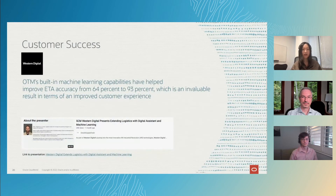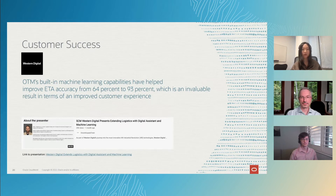Customers have deployed machine learning in OTM and have seen encouraging results. In this presentation, this customer, Wesson Digital, mentioned they were able to improve ETA accuracy from 64% to 93%. This improvement helps the customer deliver an even more outstanding experience to their end consumers.